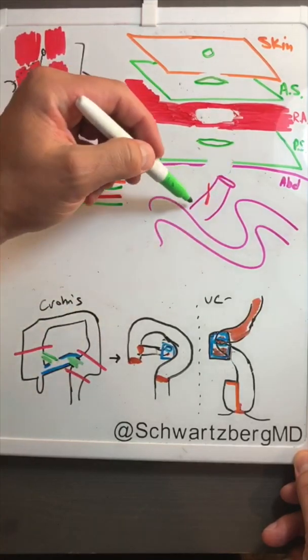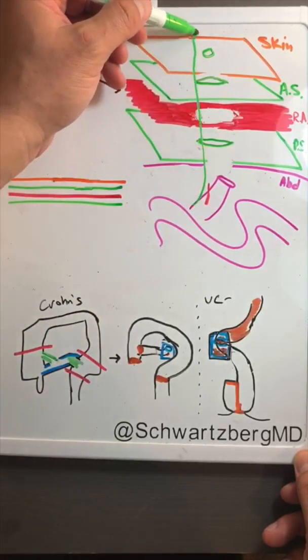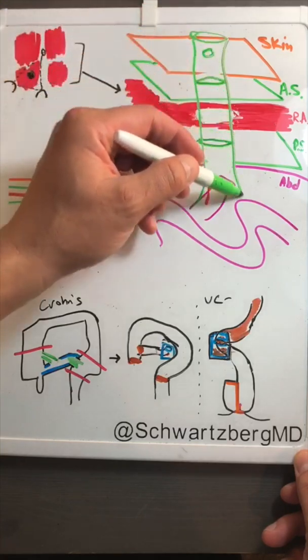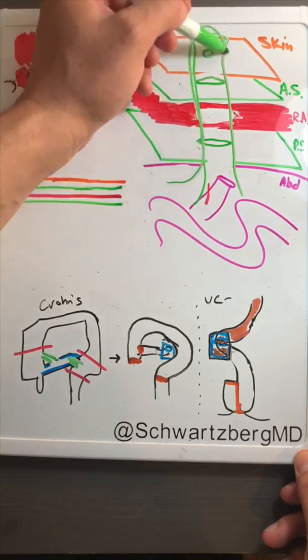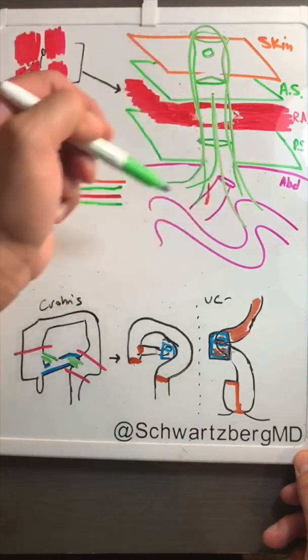Now we can take this bowel and bring it through up to the abdominal wall, whether it's a single loop like an end ileostomy, or there's actually two pieces of bowel, which is a loop ileostomy.